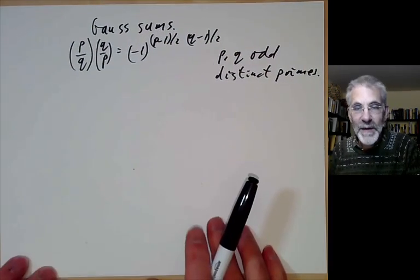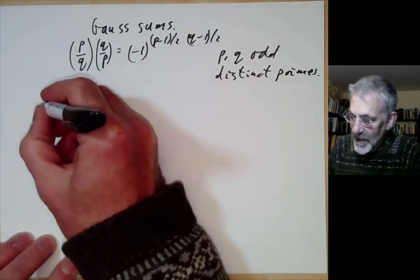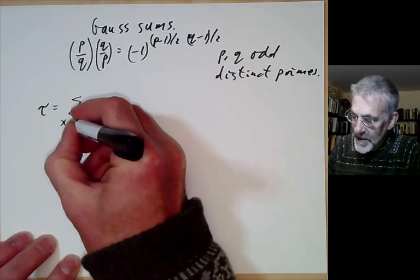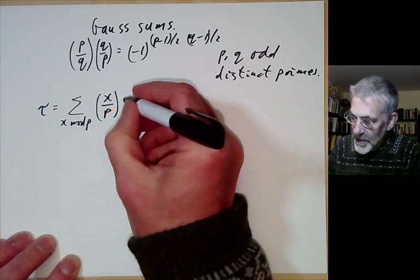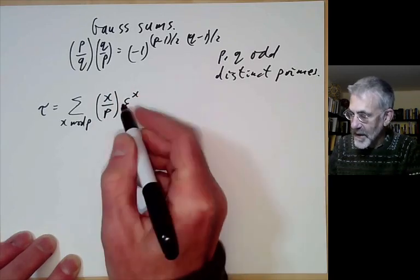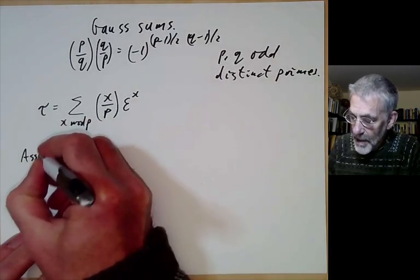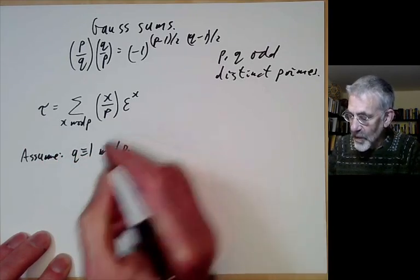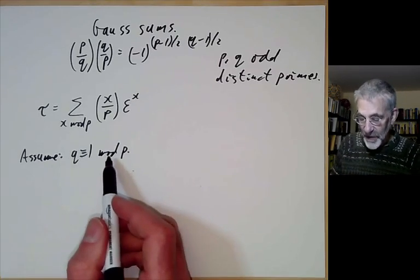So we're going to give a second proof. First of all, we need to define what a Gauss sum is. A Gauss sum, often denoted by the Greek letter tau, is the sum over x mod p of the Legendre symbol (x/p) multiplied by epsilon to the x. We're going to assume that q is congruent to 1 mod p for simplicity, and at the end of the lecture I'll explain what you do if q is not congruent to 1 mod p.